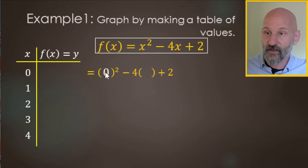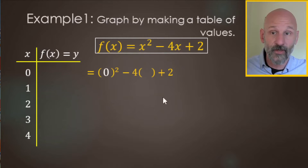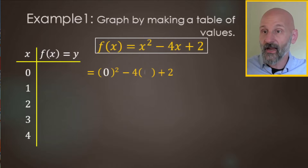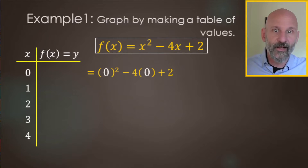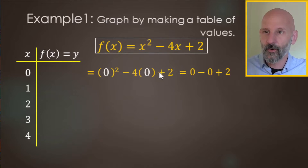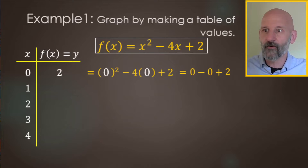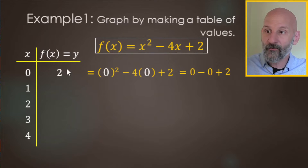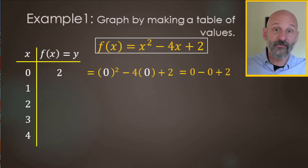We replace the x's with zero, so we have zero squared minus four times zero plus two. Using order of operations: exponents first — zero squared is zero, minus four times zero is zero, plus two makes two. So the y value of two comes from an x value of zero.